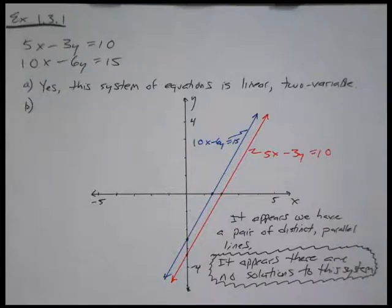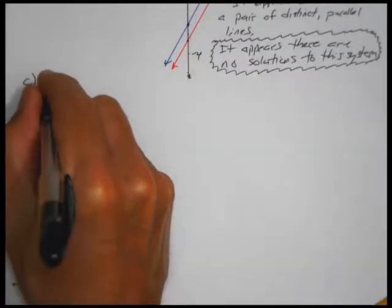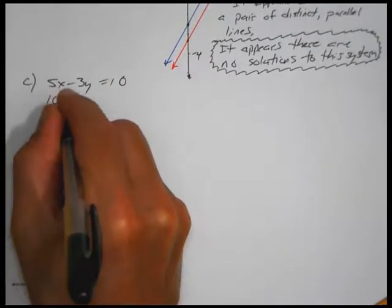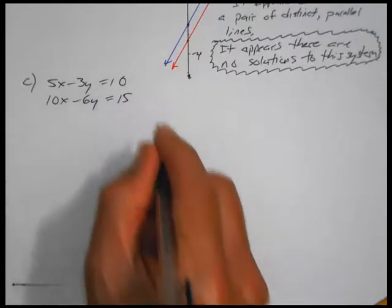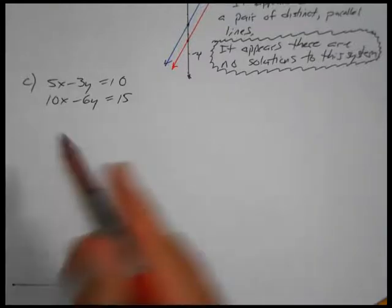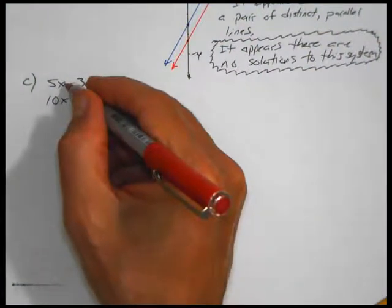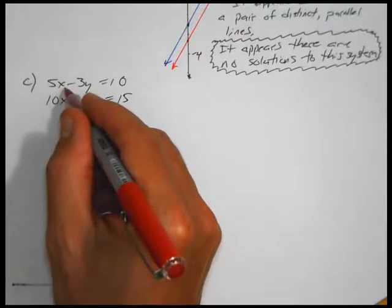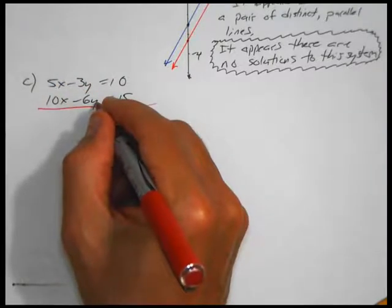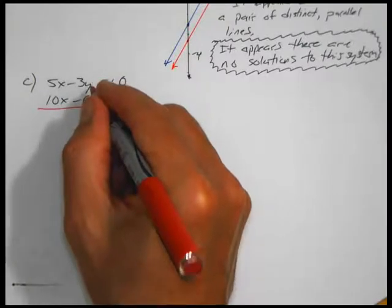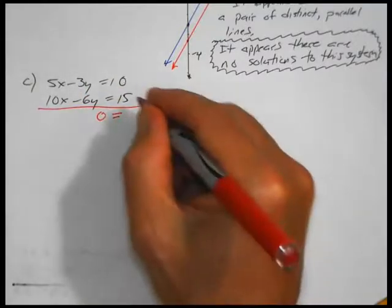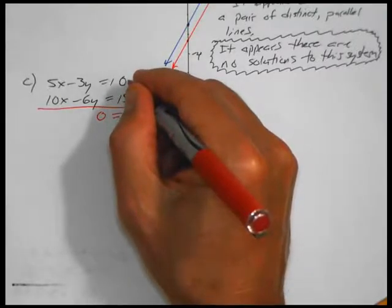Part C: algebraic solution. Rewriting the system: first equation is 5x − 3y = 10; second equation is 10x − 6y = 15. This looks well suited for elimination. Taking the second equation and subtracting 2 times the first: 10x − 2(5x) = 0; −6y − 2(−3y) = −6y + 6y = 0; and 15 − 2(10) = 15 − 20 = −5.